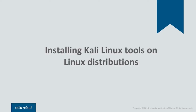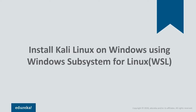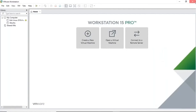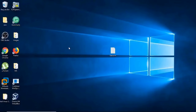So we're done with three things: first, installing on Windows using VMware; second, on Mac using VirtualBox; and third, installing Kali Linux tools on any Linux distribution. Finally, there's one last demo — we'll see how to install Kali Linux on Windows using the Windows Subsystem for Linux feature.